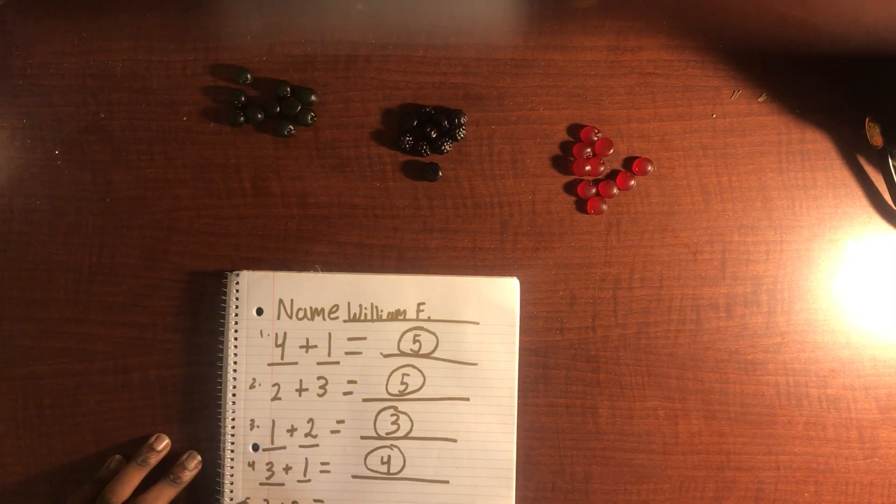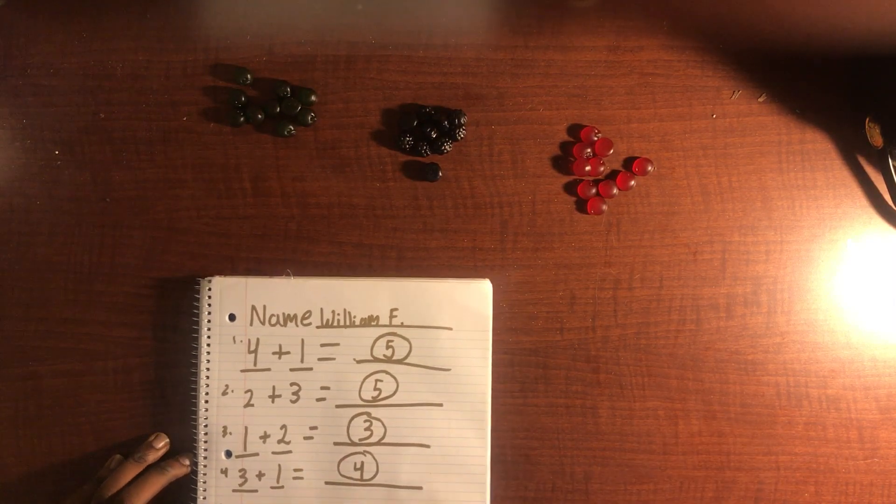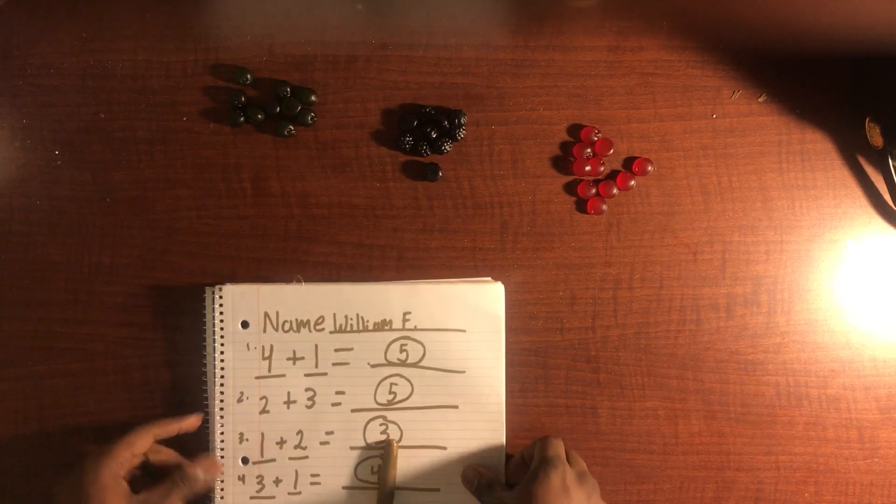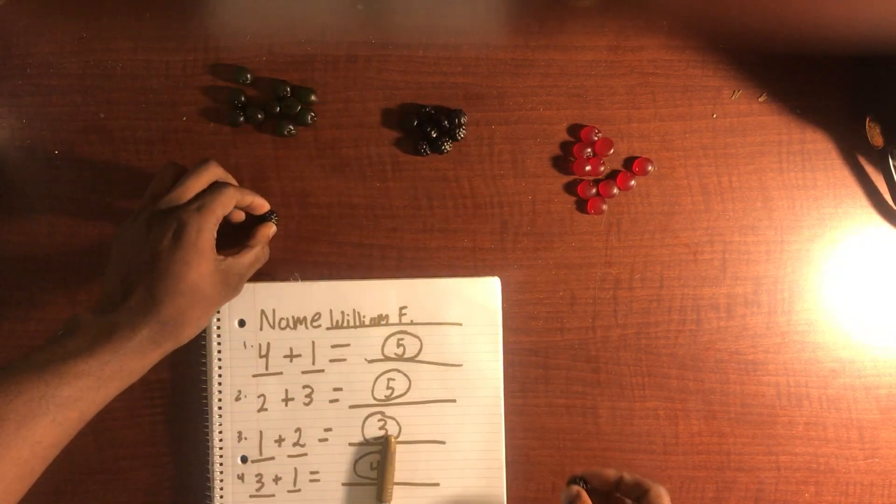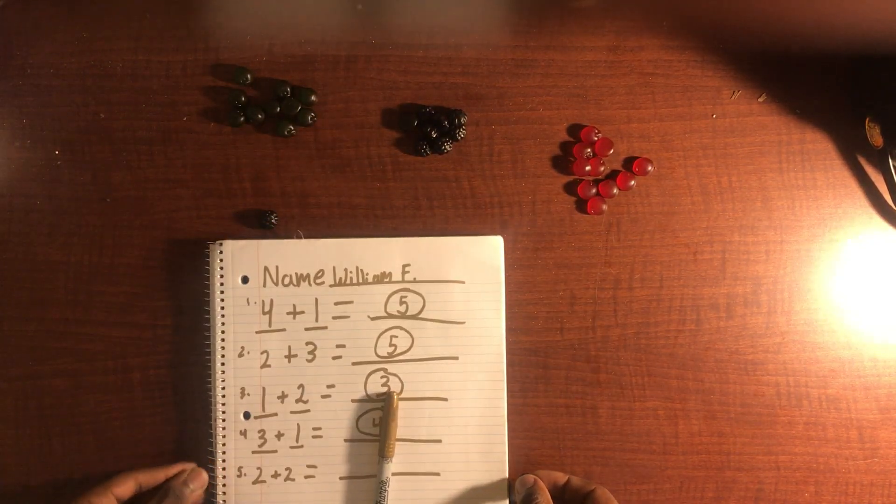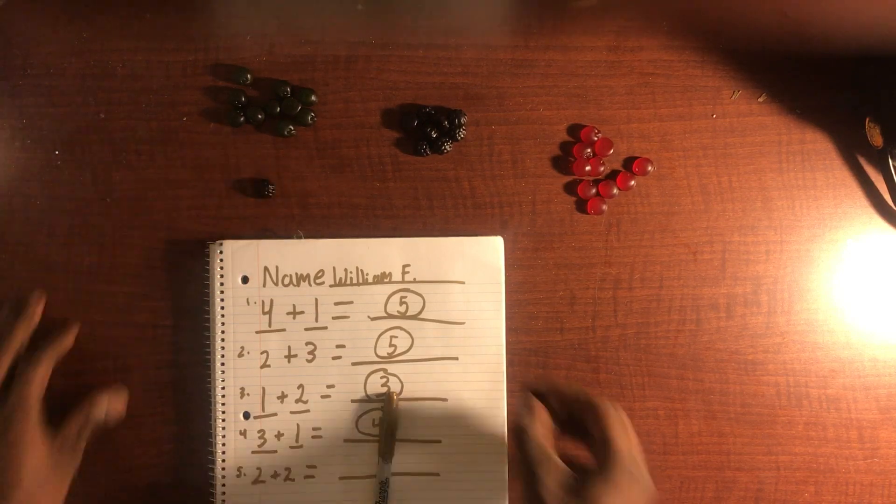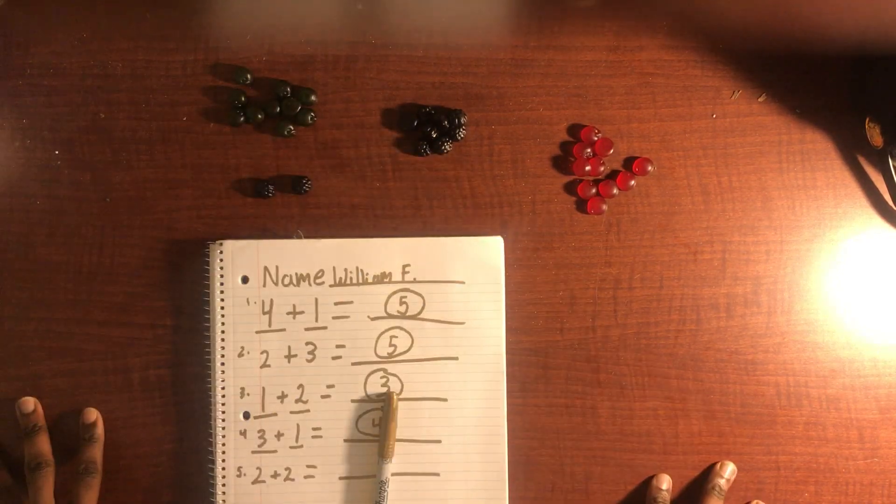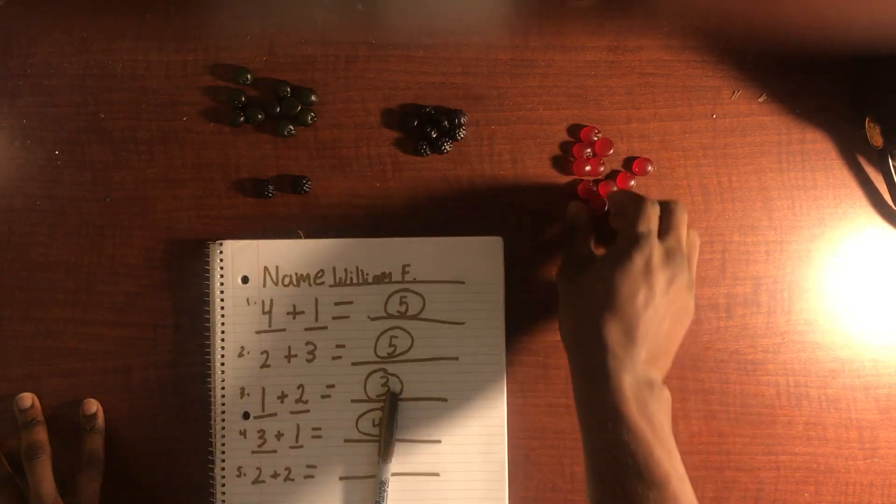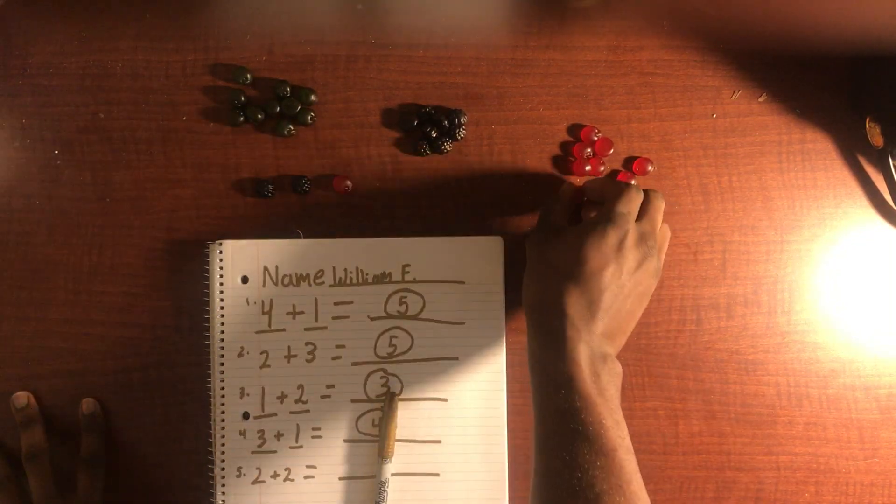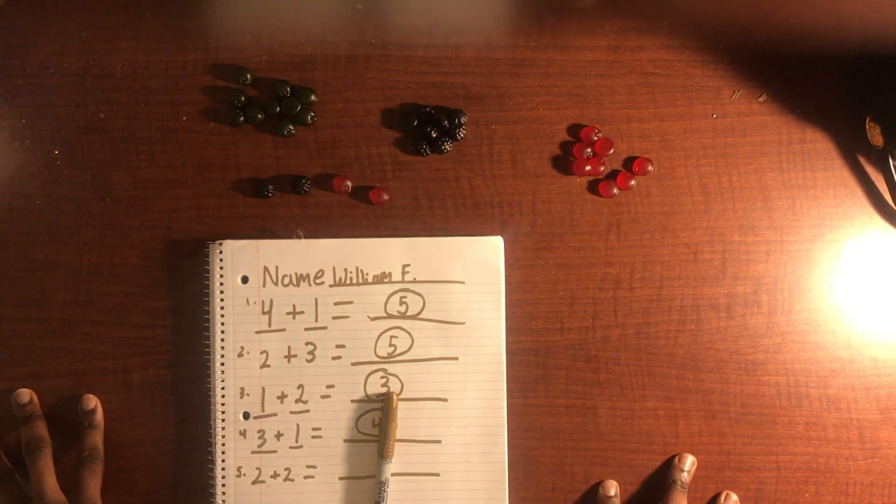Let's go ahead and do this last one, number five. Let's try and change the colors. So we have number five, we have two plus two. So we're going to have two black gummies, and we're going to add two red gummies.